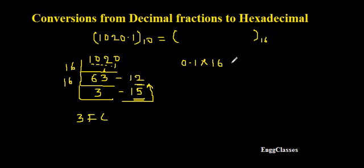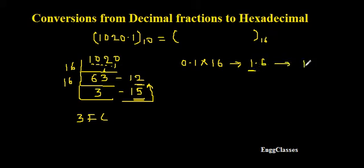First I consider 0.1 and multiply it by 16. That gives 1.6. I take the integer part — which is 1 — and write it as the hex digit. Then I consider only the remaining fractional part 0.6.